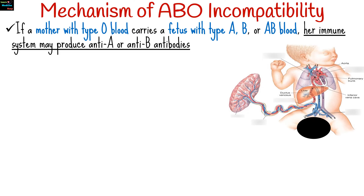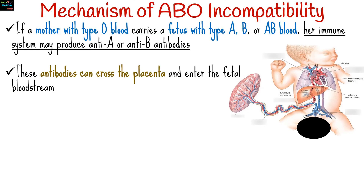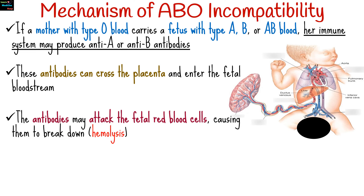Let's have a look at how ABO incompatibility occurs. If a mother with type O blood carries a fetus with type A, B, or AB blood, her immune system may produce anti-A or anti-B antibodies. These antibodies can cross the placenta and enter the fetal bloodstream, where they may attack the fetal red blood cells, causing them to break down.